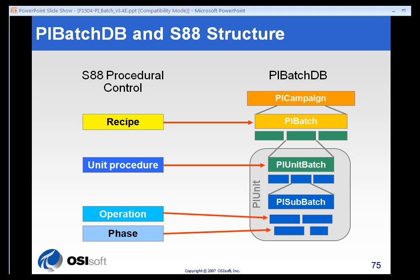You can very easily map your PI Batch database structure to the S88 procedural control model. Here's an example where we have our PI Batch database diagram on the right, and a procedural control example on the left where the recipe would be reflective of the PI Batch. The PI Batch is a single recipe that you're running. The unit procedure would be a specific run, a specific unit run within a particular batch, and those might have, in turn, operations and phases.